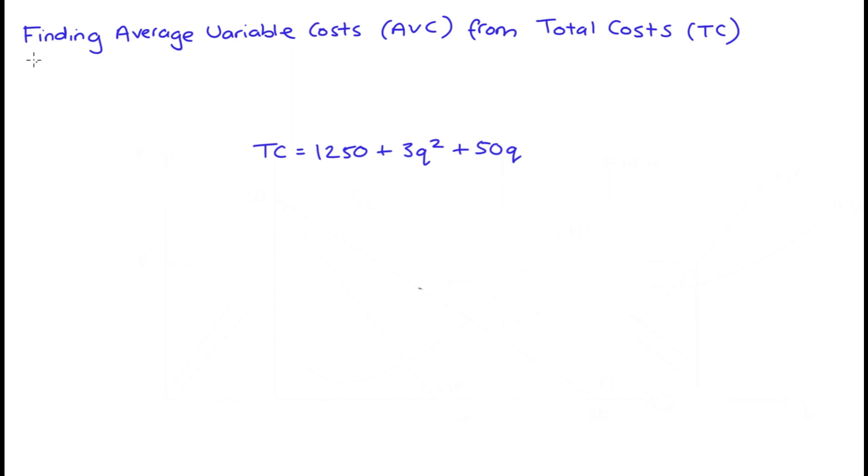Hey everyone, in this video I'm going to demonstrate finding average variable costs, so that's AVC, from a total cost function, so total cost is TC.